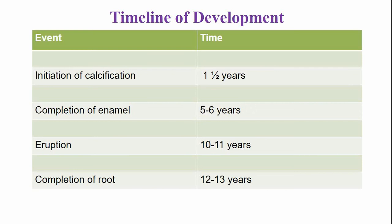The maxillary first premolar: the calcification of this tooth begins around the age of one and a half years. The enamel is completed by the age of five to six years. The tooth emerges into the oral cavity by the age of 10 to 11 years. And the root is completed by the age of 12 to 13 years — so simply add 10 plus 2 equals 12.